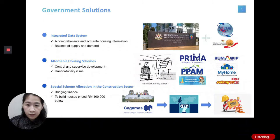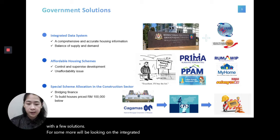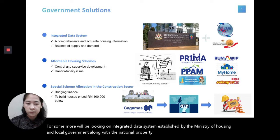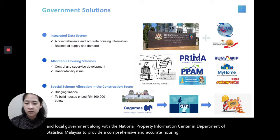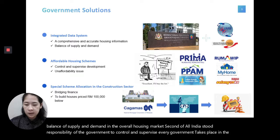Based on the issues mentioned earlier, the government has come up with a few solutions. First, an integrated data system was established by the Ministry of Housing and Local Government along with the National Property Information Centre and Department of Statistics Malaysia to provide comprehensive and accurate housing information, ensuring balance of supply and demand in the housing market. Second, the government has a responsibility to control and supervise every development taking place in the country. Currently there are six housing schemes available to the public.